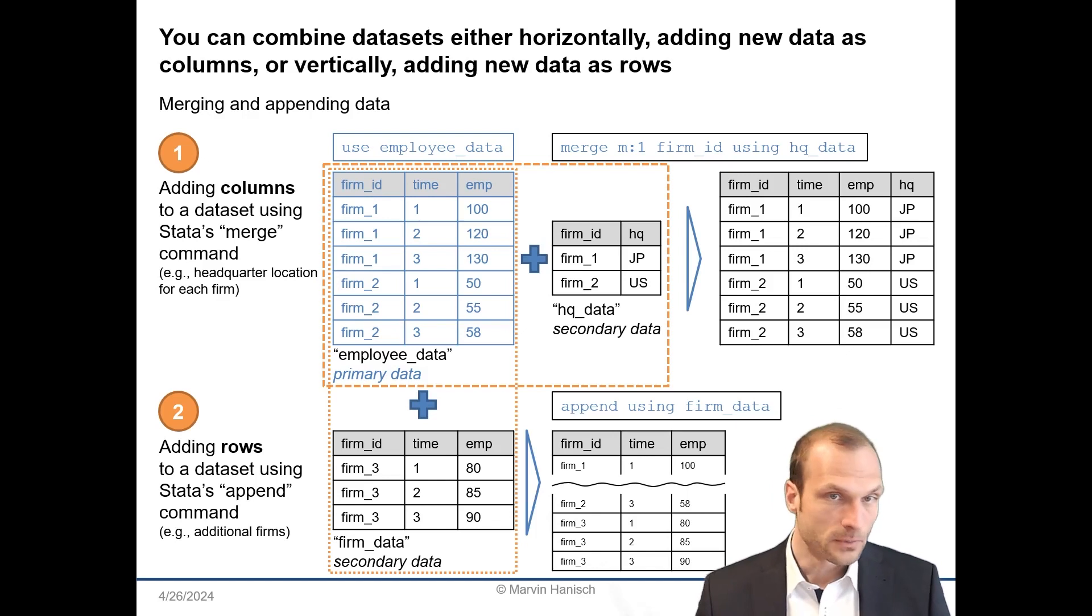The command is simple. First, you use your primary dataset and open it using the use command. Then, you type append using, followed by the name of your secondary dataset. The result is a dataset with the same columns as the primary dataset and the new rows from the secondary dataset added at the bottom.